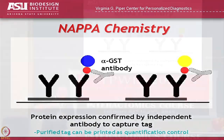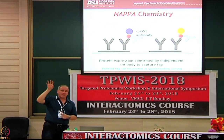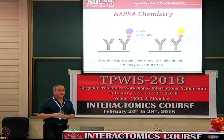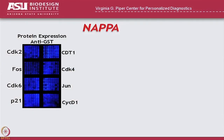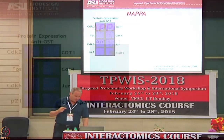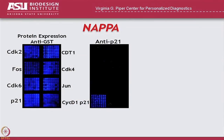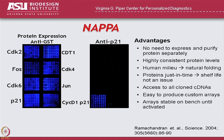We probe with anti-GST — that's a way of measuring how much total protein we have on the array, and all of them light up. Then if we probe with anti-P21, same idea as the little 96-well plate, now we only get P21 lighting up. The advantages are pretty much the same ones I covered, so I won't go over them again.